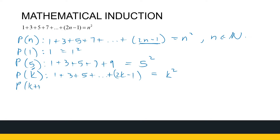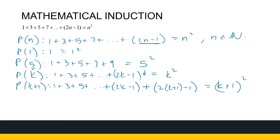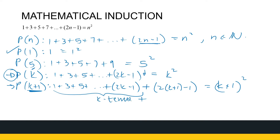PK plus 1 is all the terms in PK plus one more. It's 1 plus 3 plus 5 all the way to the Kth term, which is 2K minus 1, and then one more — the K plus 1th term, which is 2 times K plus 1 minus 1. And that equals K plus 1 squared. Notice that PK plus 1 is the first K terms plus that last term. Now we're going to use mathematical induction to prove a statement true.